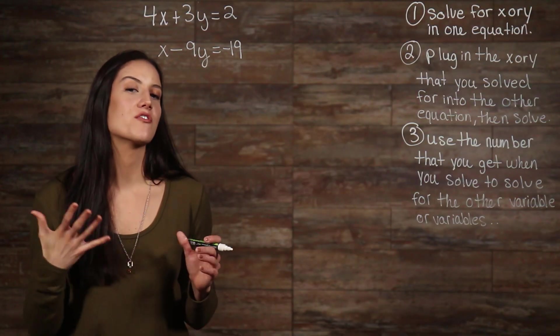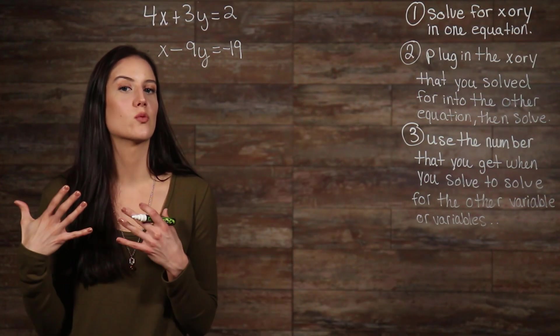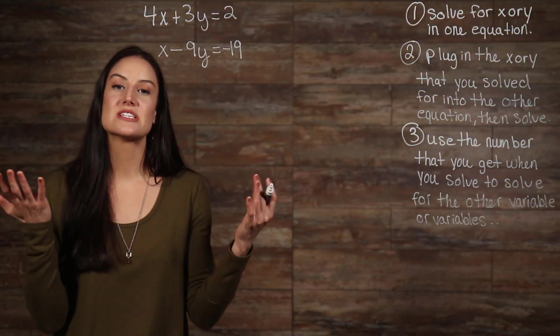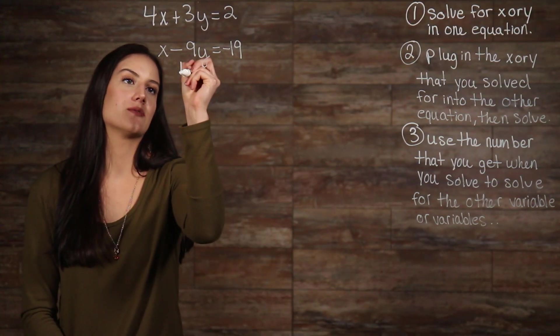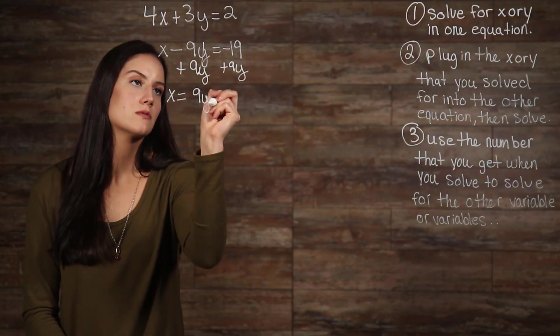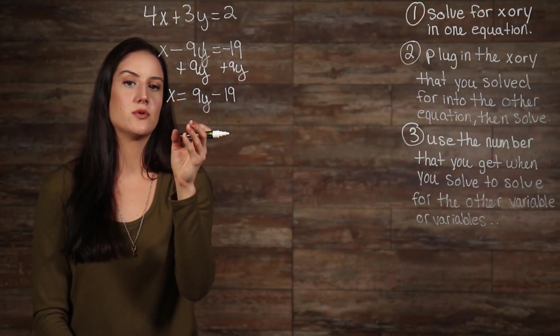Now, you can actually solve for any of the variables. It will just always be easier to solve for one that has a coefficient of one or negative one. Now, to do this, we just add 9y to both sides. So, we've done what our first step tells us to do, and we solved for one of our variables.